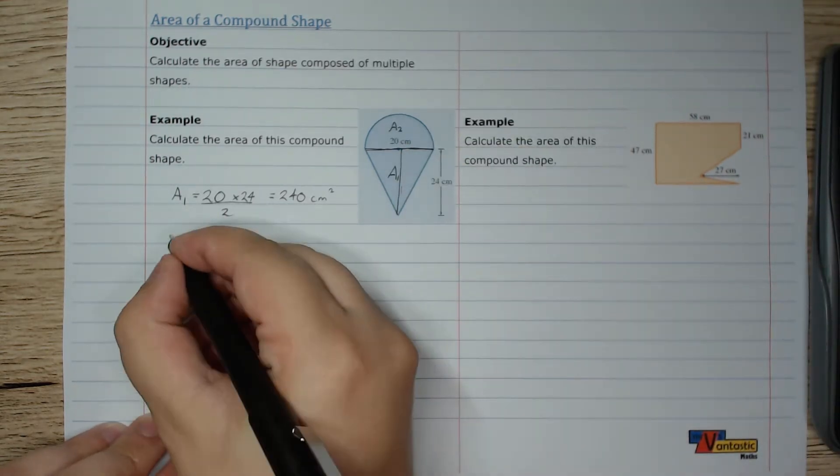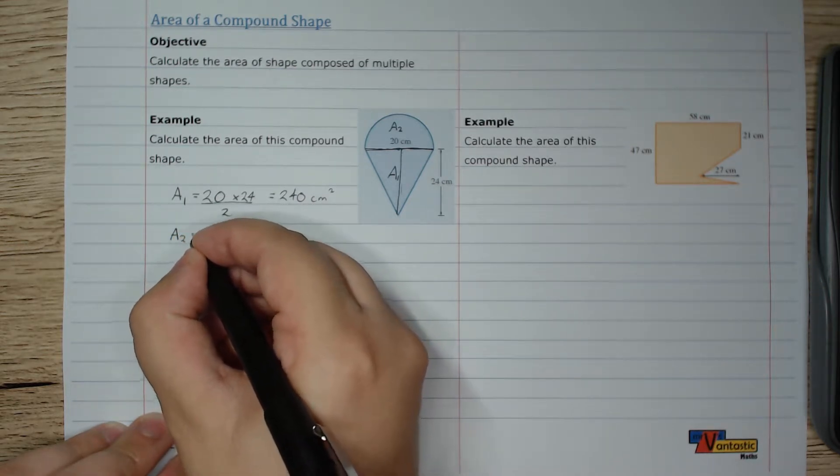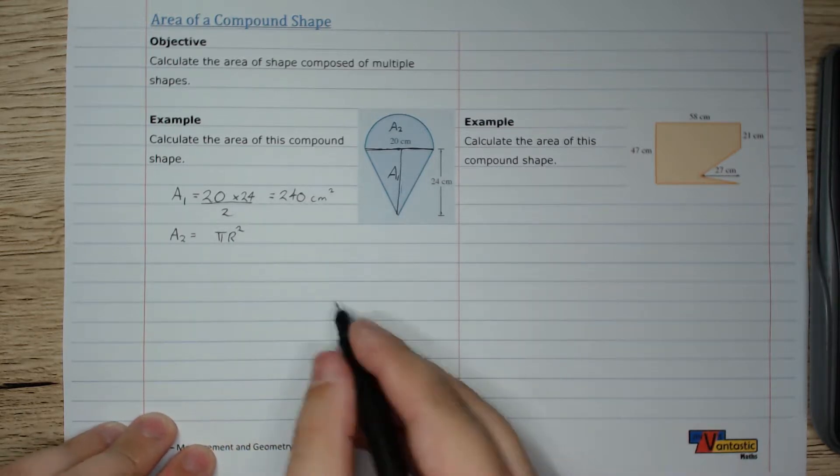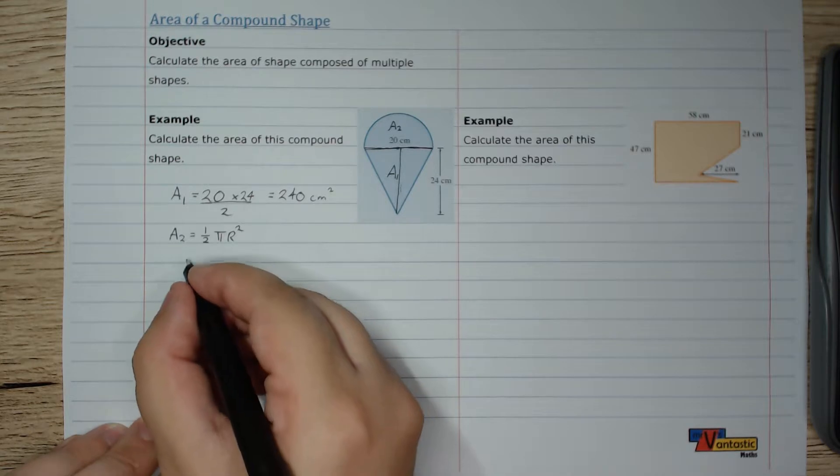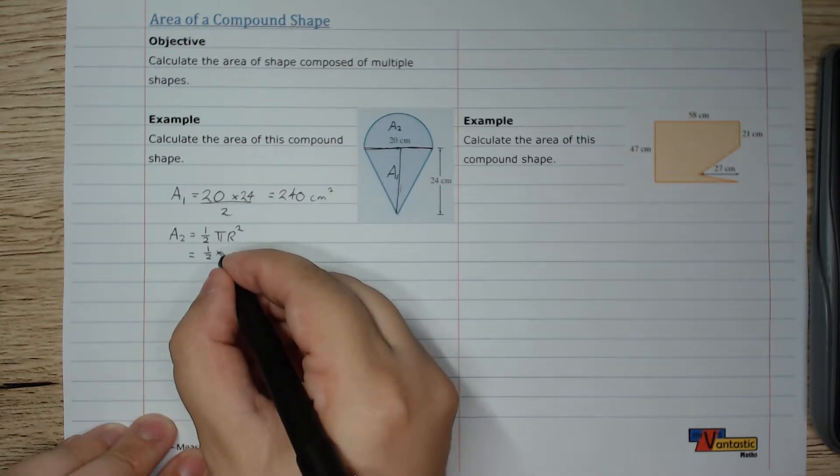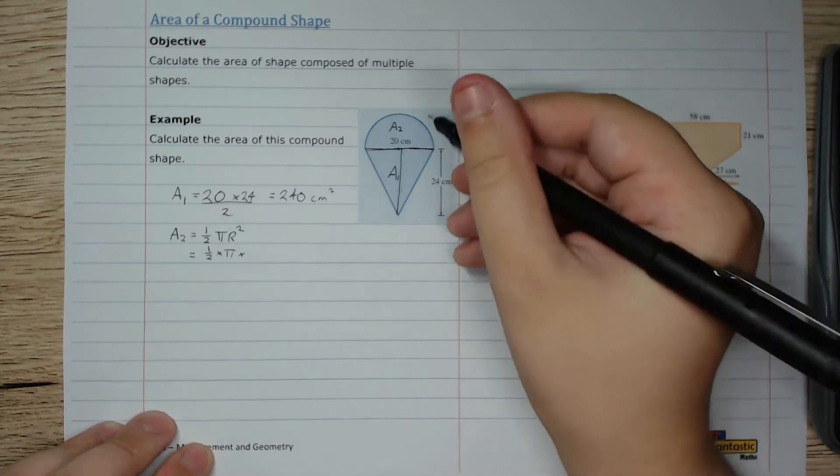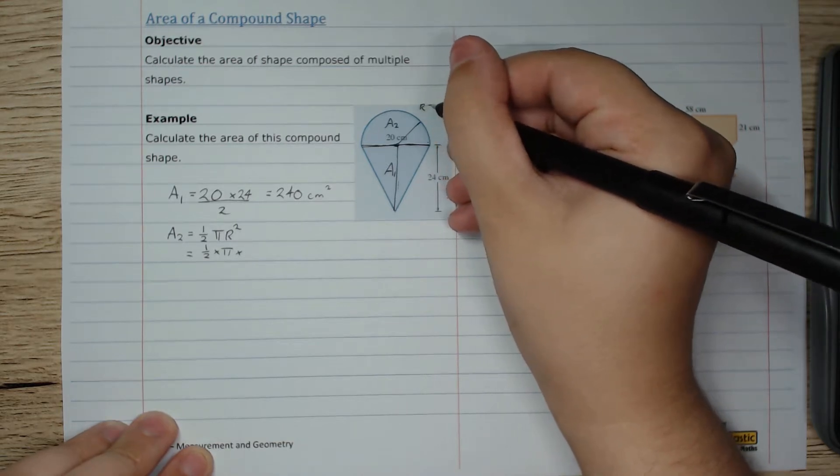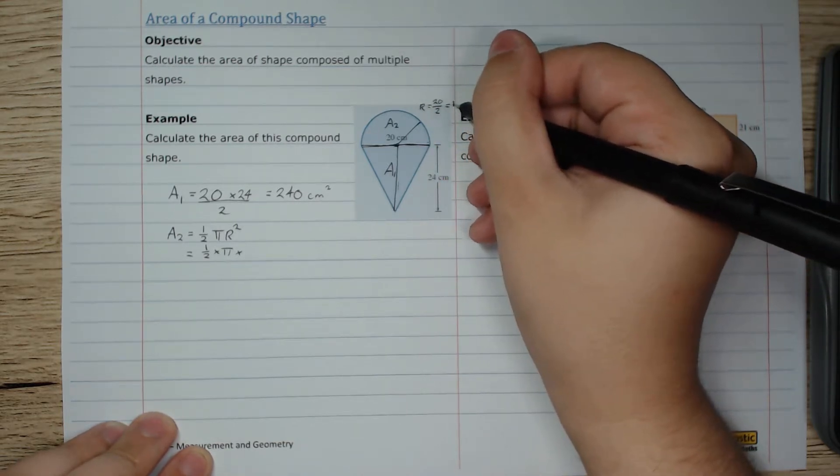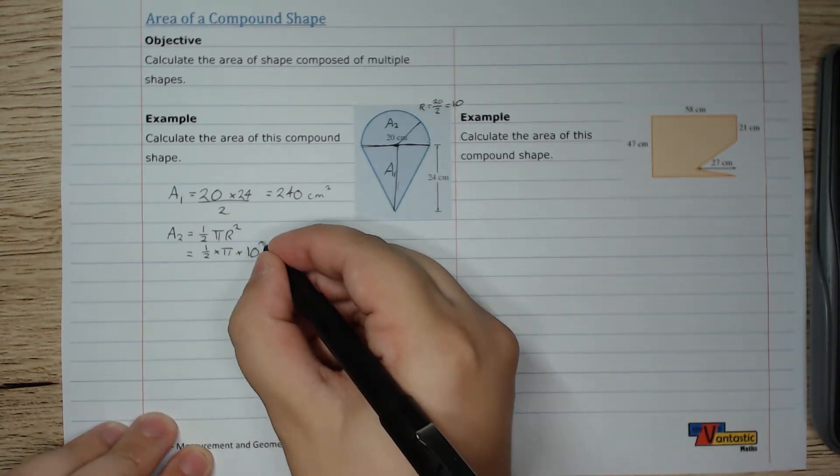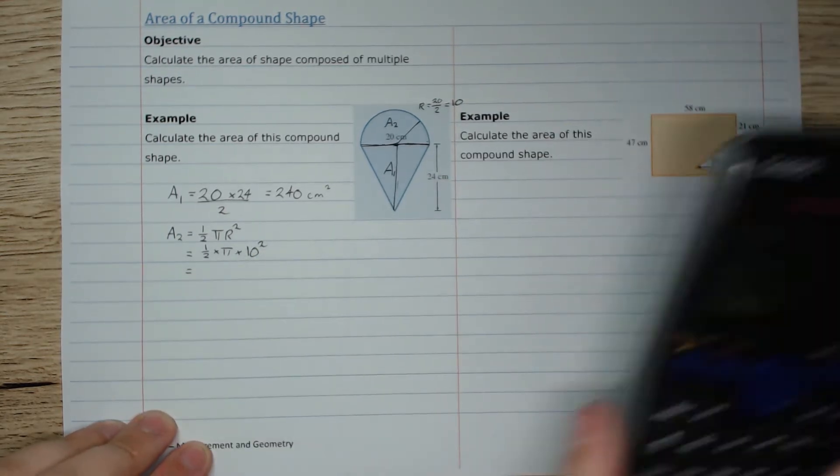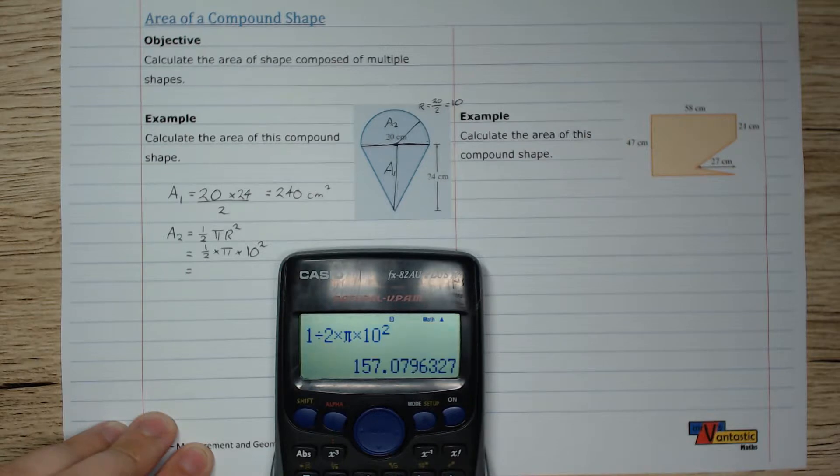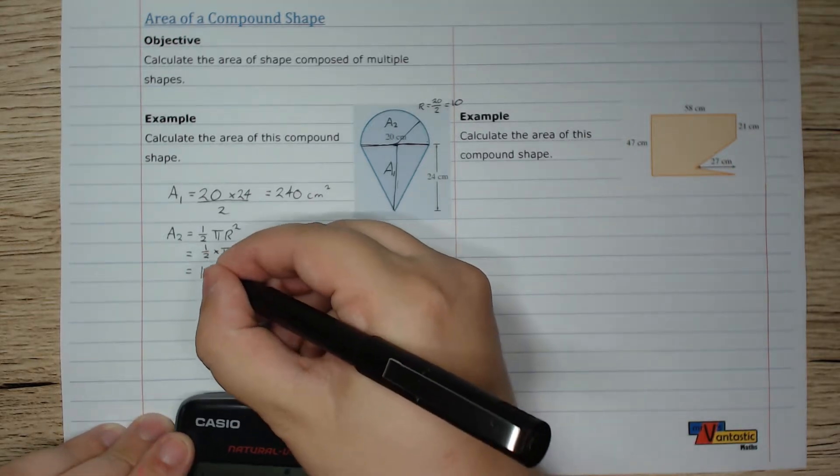Now the area of this semicircle, area two, is going to be the area of a circle, pi r squared, and we have half a circle, so it's going to be a half pi r squared. A half times pi times, I know here my diameter, but my radius is going to be half of that, so my radius is going to be half of 20, which is 10, so times 10 squared. On my calculator, 1 divided by 2 times pi times 10 squared equals 157, and we'll round it to a whole number.